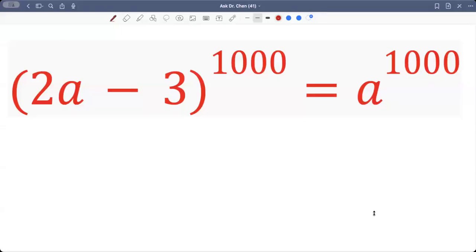Let's see this question. Both sides are raised by 1000. The left-hand side, the base is 2a minus 3. The right-hand side is just a.